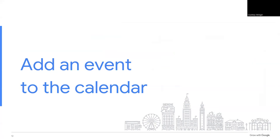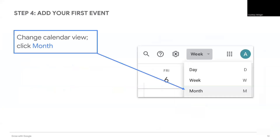Now let's walk through the steps to add an event to your new calendar. When you plan an event as a group, one person will add the event and then share it with others. Think about why it would help to have one calendar for a group, instead of everyone keeping track in their own calendars.